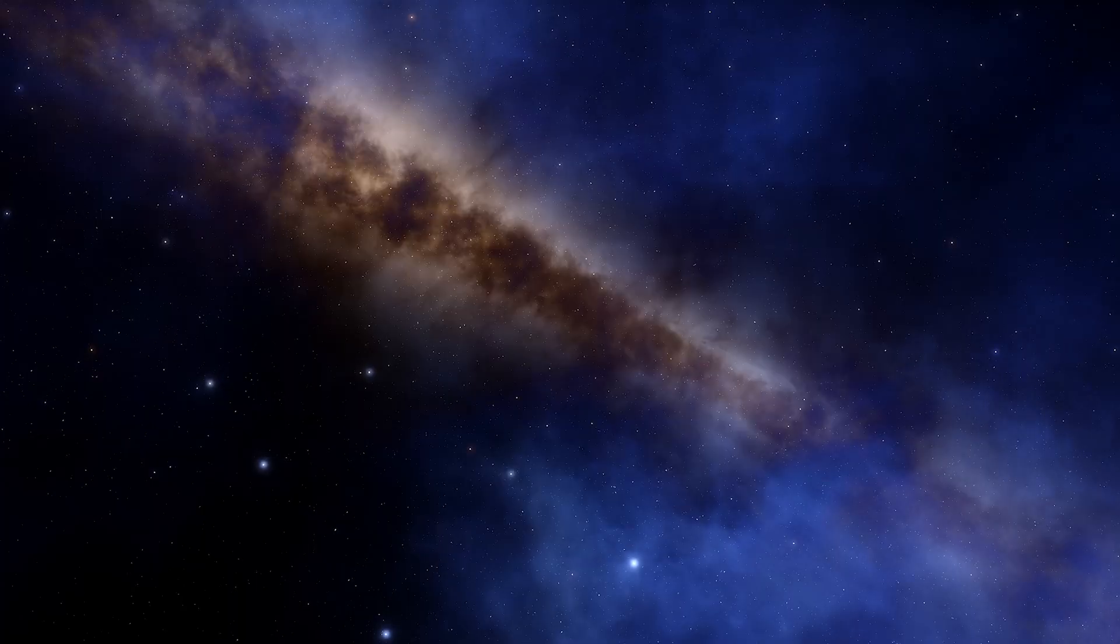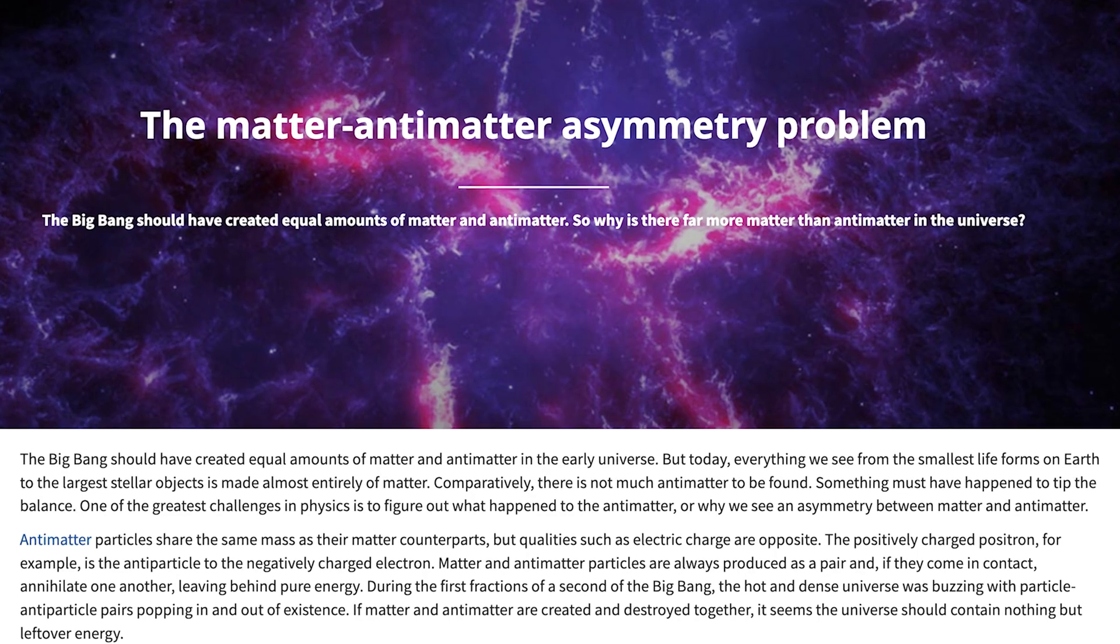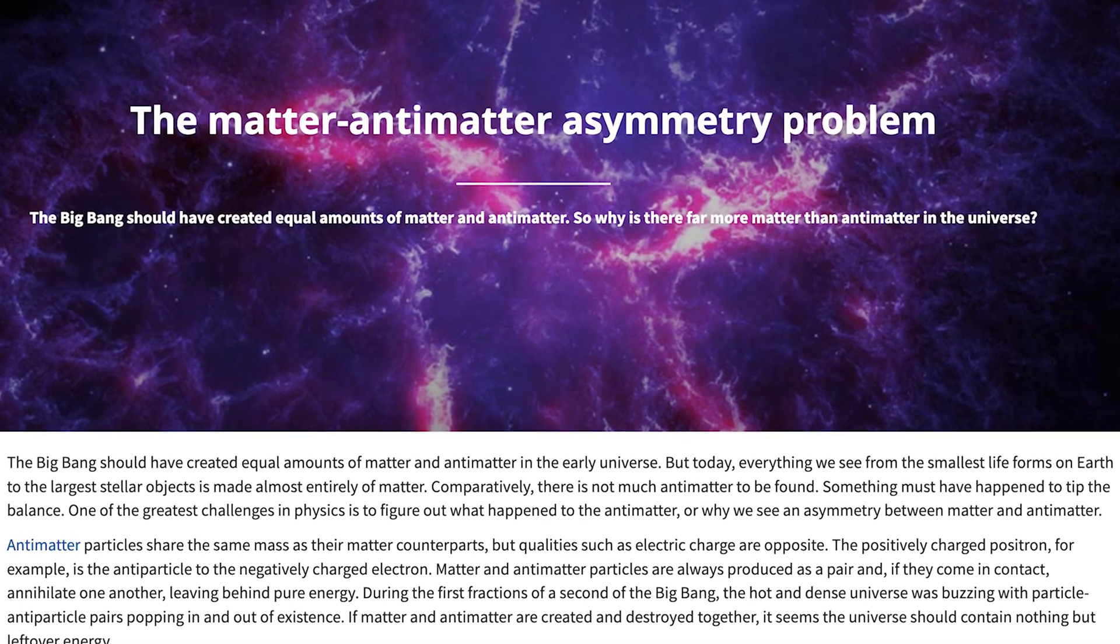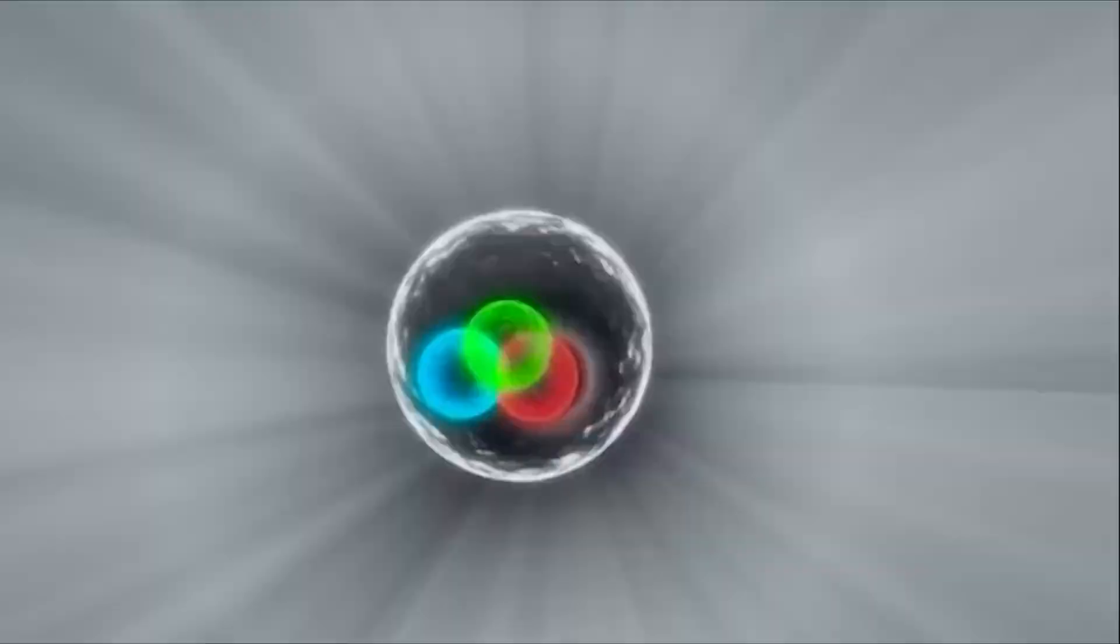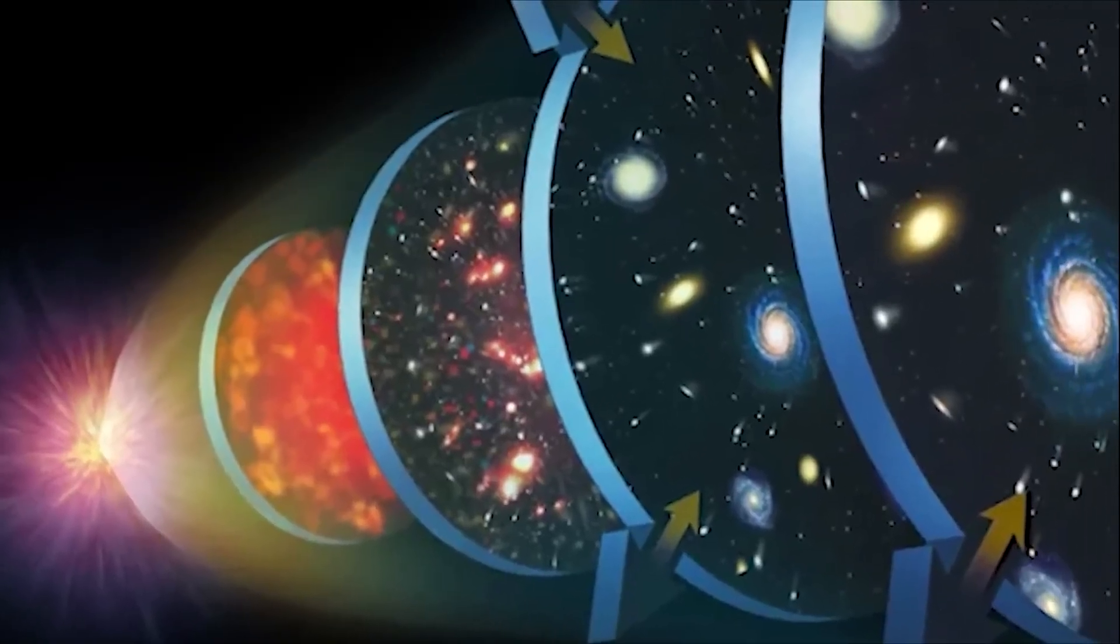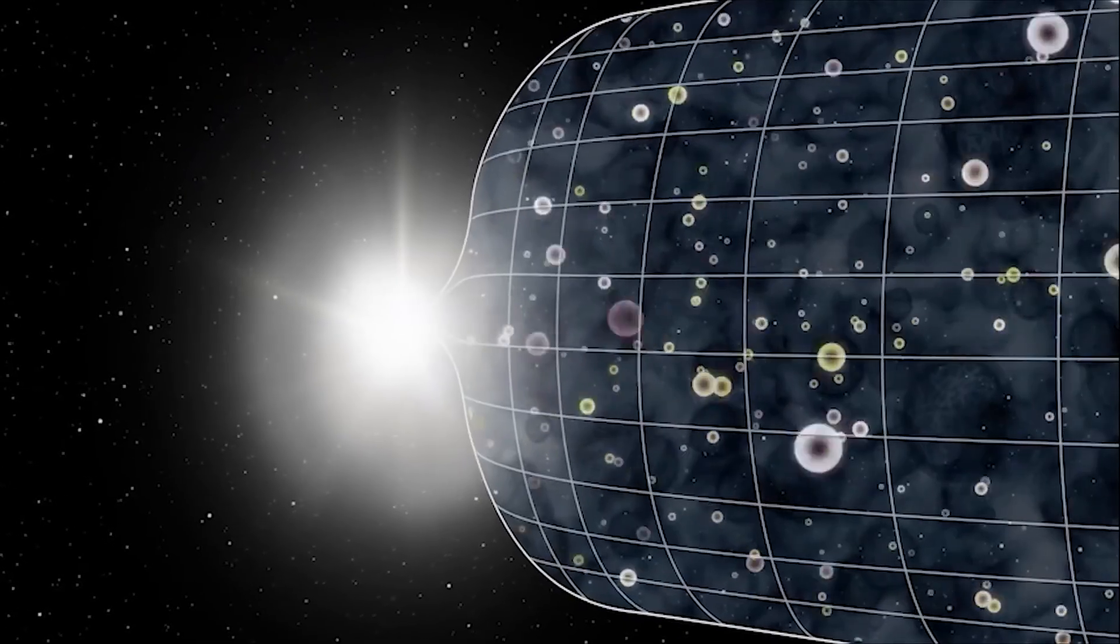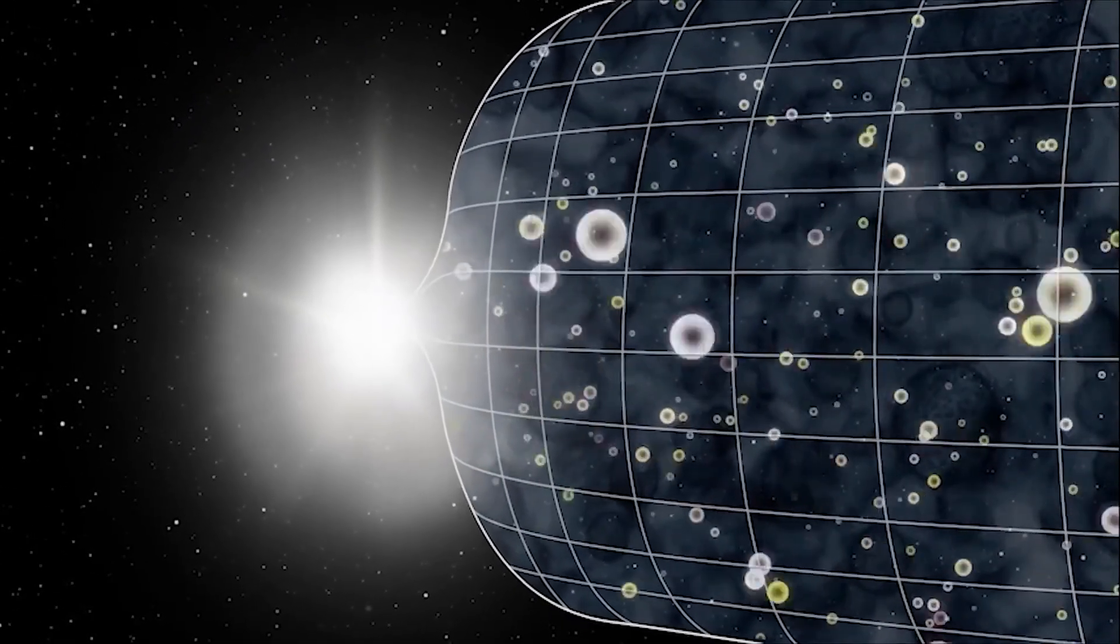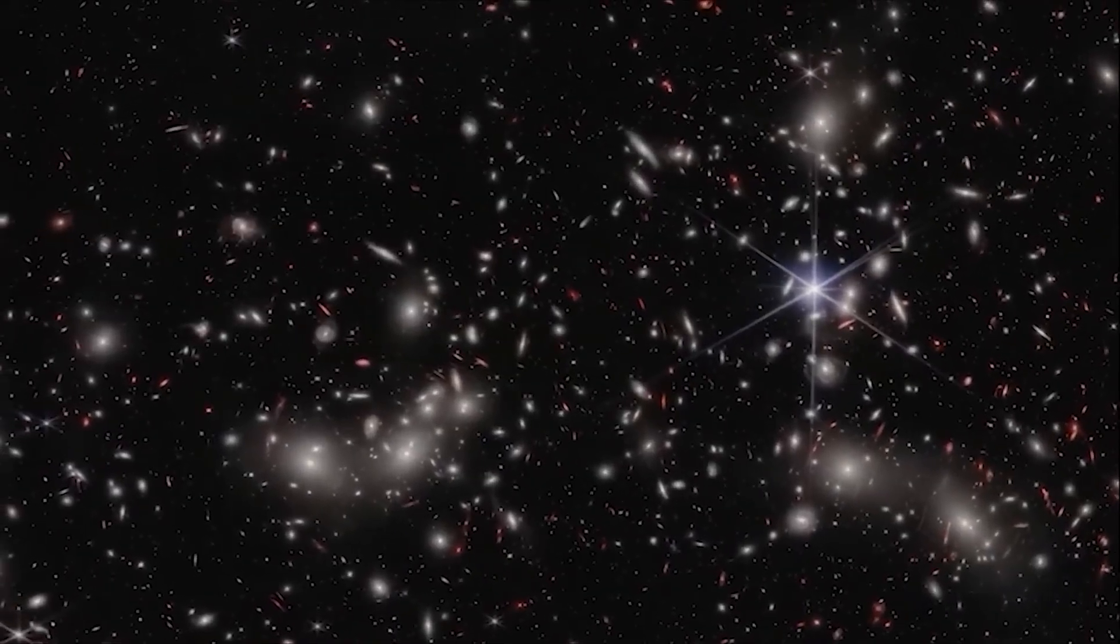This massive contradiction has confused physicists for decades, and it's called the matter-antimatter asymmetry problem. It's the ultimate mystery. Where did all the antimatter go? If we can figure out why matter survived, we might finally understand why our universe even exists. It's like a cosmic detective story, where the biggest clue is everything.